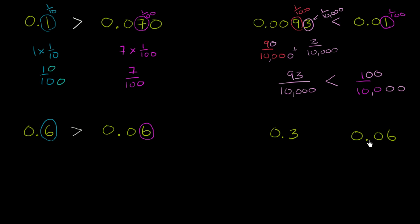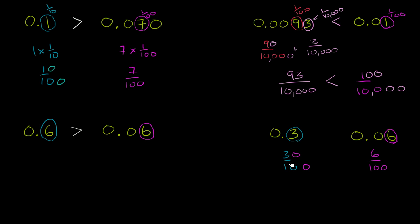Now let's think about 0.3 versus 0.06. This 3 literally represents three tenths, while this 6 right over here represents six hundredths. If you wanted to compare them directly, you could multiply three tenths by 10 over 10 — which equals 1, so you're not changing its value — and it becomes 30 over 100. Three tenths is the same thing as 30 hundredths, and 30 over 100 is a lot larger than 6 over 100. So 0.3 is greater than 0.06.